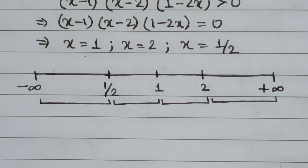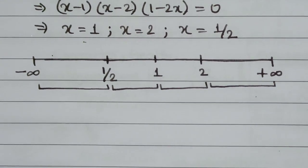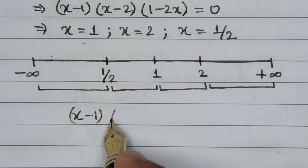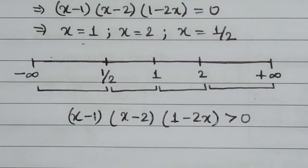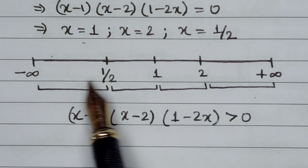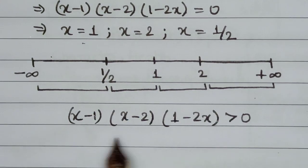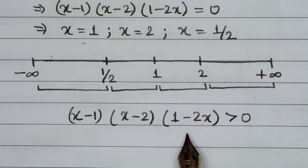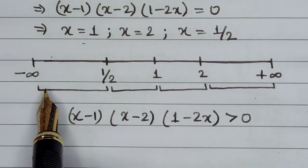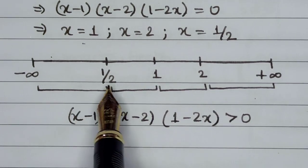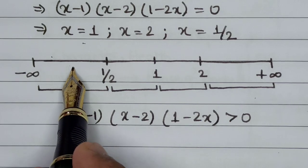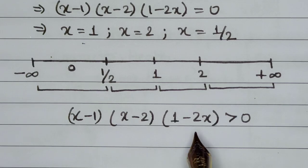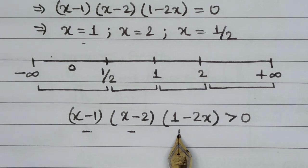We have to find a range that satisfies the inequality (x−1)(x−2)(1−2x) > 0. All we have to do is pick a number from each range and substitute it to check what sign — positive or negative — is generated. Let us take a number between negative infinity and 1/2; 0 lies in this range. When I substitute x = 0: (0−1) gives a negative number, (0−2) gives a negative number, and (1−2×0) gives a positive number.